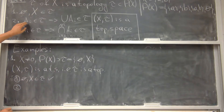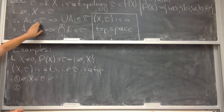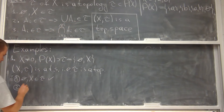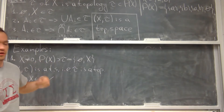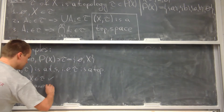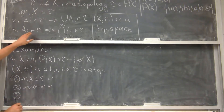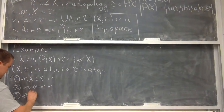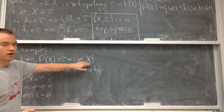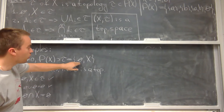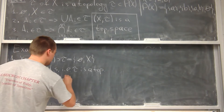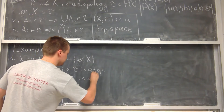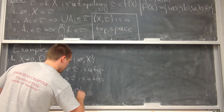For the second condition, we need any union of elements of τ to belong to τ. The possible unions are: empty set ∪ empty set = empty set (belongs), empty set ∪ X = X (belongs), X ∪ X = X (belongs). So condition two is checked. For the third condition, finite intersections: empty set ∩ X = empty set, which belongs. Since we only have two elements, every finite intersection gives one of those elements. So all three axioms are satisfied, τ is a topology, and (X, τ) is a topological space.